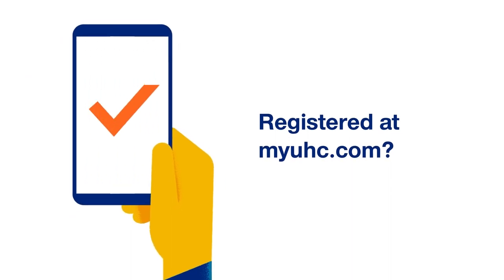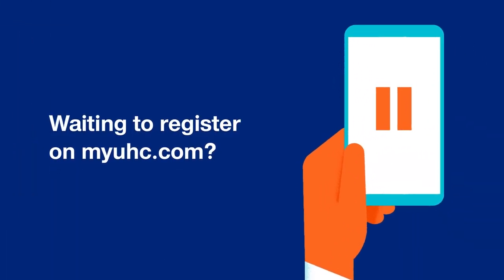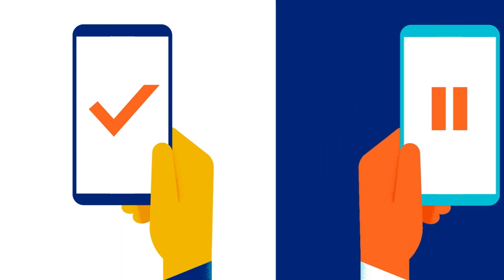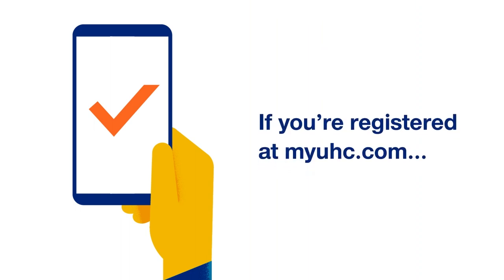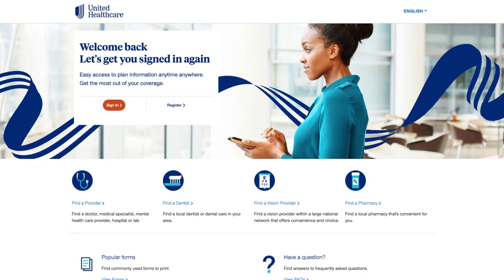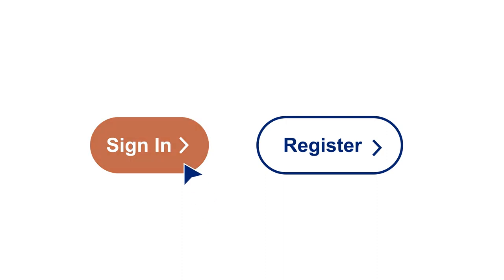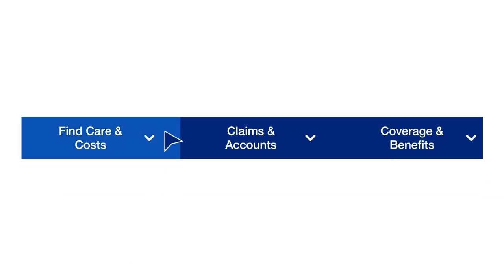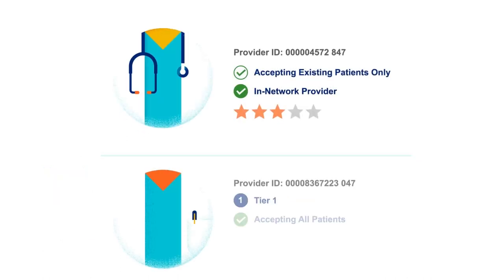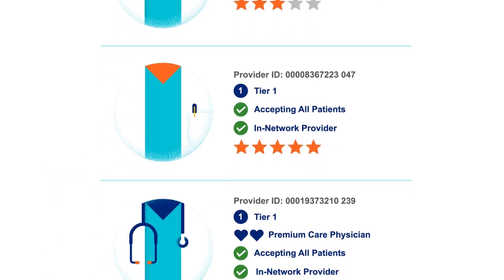or are you waiting for your health plan to begin? Depending on your answer, the way to find a PCP will be different. So let's walk through those different ways right now. For those registered at myUHC.com, here's how you'll find a PCP: you'll go to myUHC.com, sign into your account, and select Find Care and Costs, then Primary Care Providers.